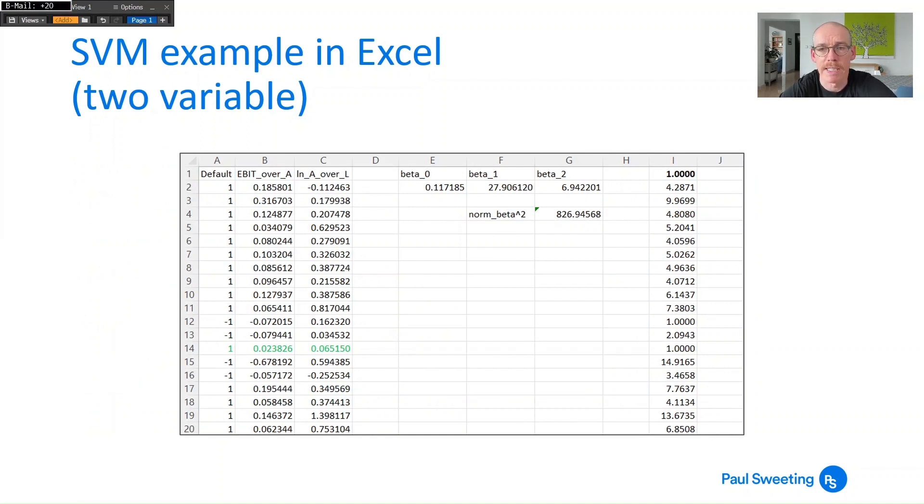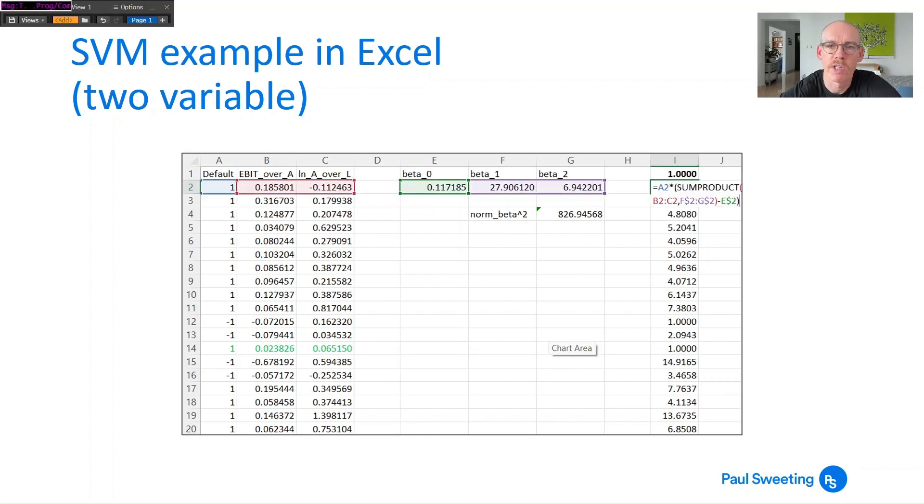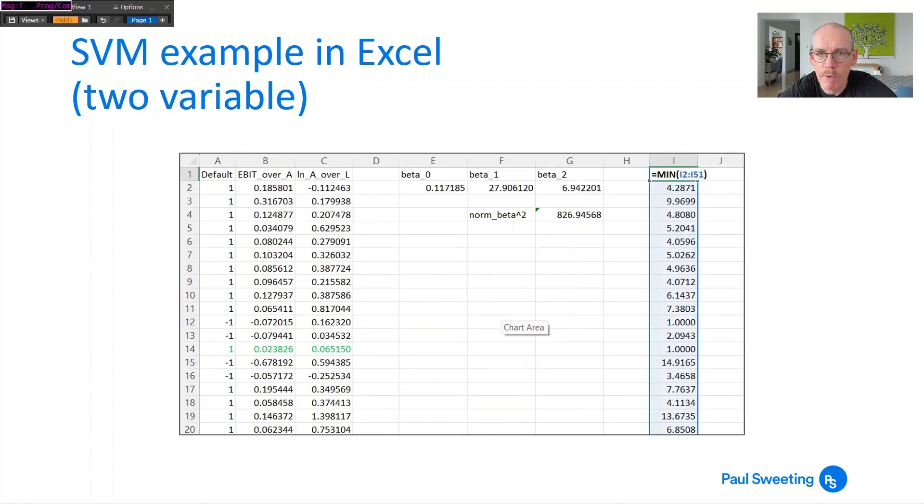So this is all it takes in a spreadsheet, not very much at all. You've got here this expression which is a2 so the default number multiplied by the sum product of b2 to c2 (so those two variables) and f2 to g2 which is β₁ and β₂ minus e2 which is β₀. And what you're doing is you're copying that all the way down and just fixing the references to β₀, β₁ and β₂ and what you want to do is you want to find the minimum of that set.